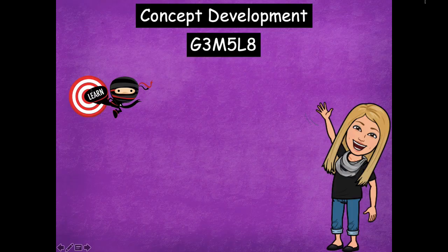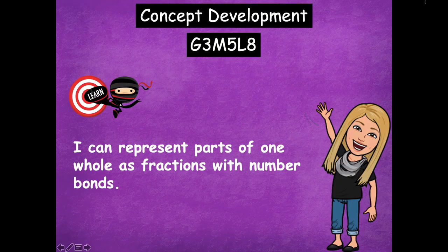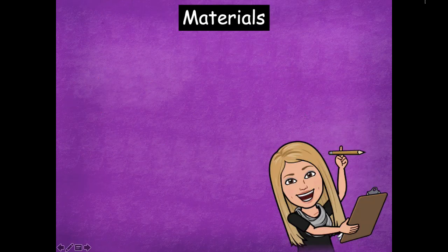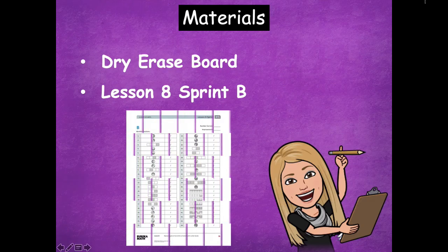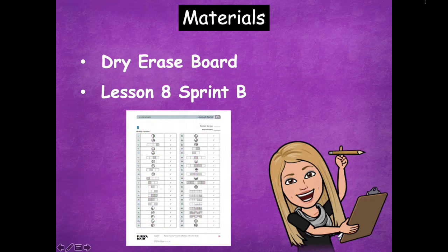Hey boys and girls, it's Mrs. Walker. For our lesson today, we're going to continue to talk about fractions, but we're going to talk about fractions with number bonds today. Our learning goal says: I can represent parts of one whole as fractions with number bonds. The materials you'll need are your dry erase board and your lesson eight sprint B. Grab both of those things and click play when you're ready to begin.